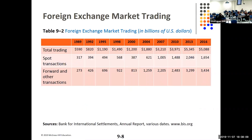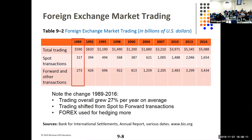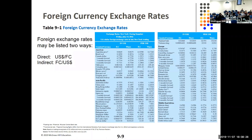Looking at the foreign exchange market between 1989 and 2016, it grew a lot and shifted from spot to forward transactions. Spot is not normally instant — it's really like two-day settlement. Exchange rates can be listed two ways: direct or indirect. Direct is US dollars to the foreign currency; indirect is the other way around.